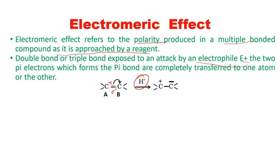The pi bond breaks and transfers the lone pair of electrons onto a carbon. The pi bond is formed due to two pi electrons. So the concept is: for a double bond exposed to an electrophile — H+ is an electrophile — the two pi electrons which form the pi bond are completely transferred to one atom or the other. The lone pair of electrons gets transferred onto carbon B, producing polarity where carbon A becomes electron-deficient and carbon B becomes electron-rich.